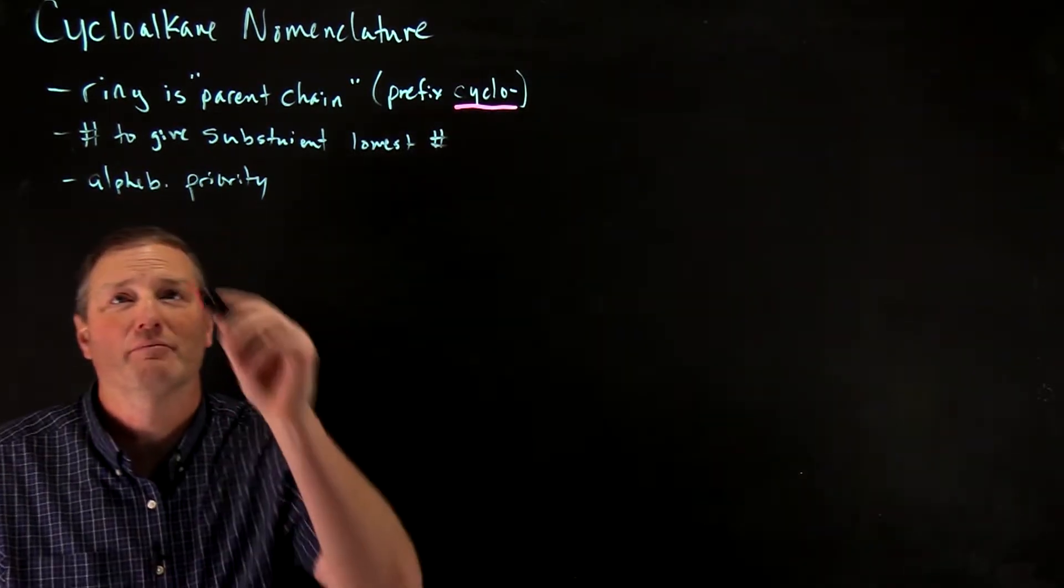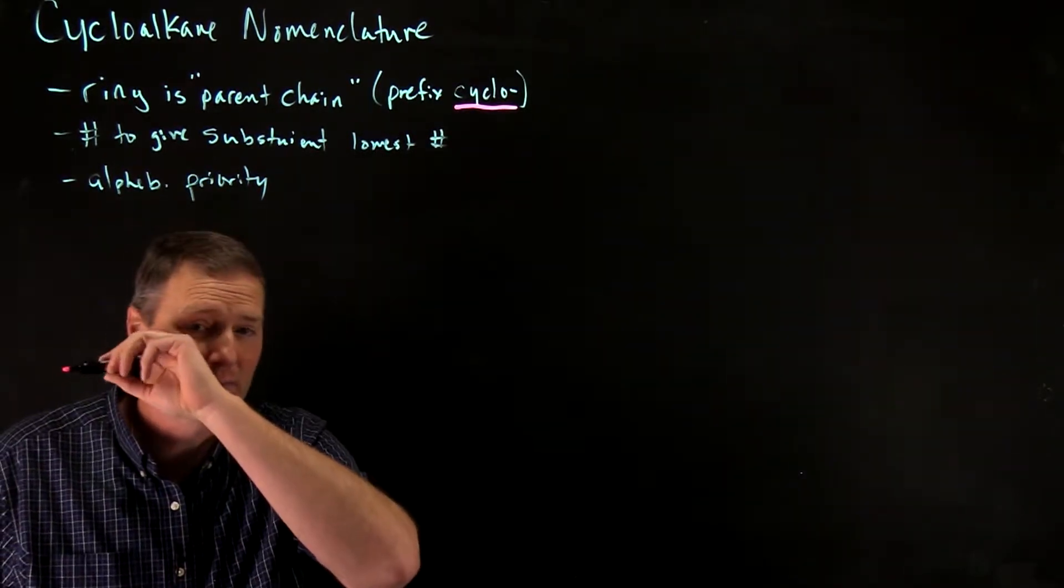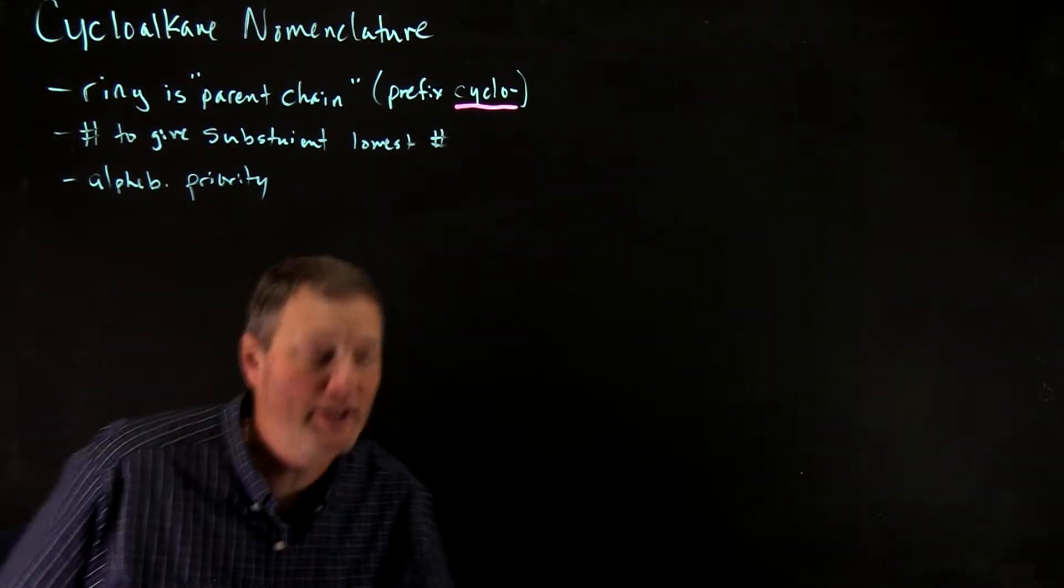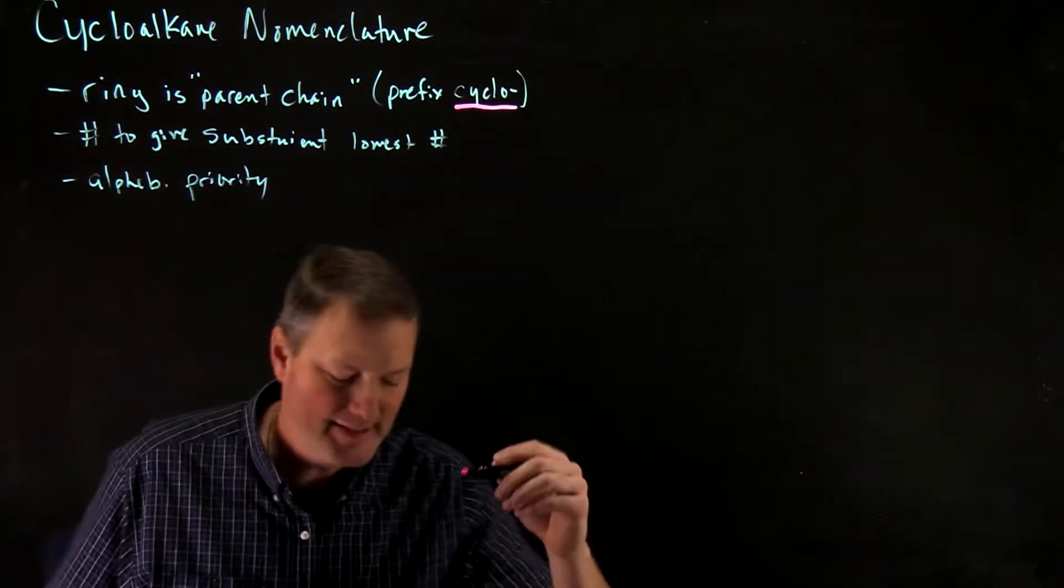And then finally, when you're listing these and numbering them, you follow alphabetization priority rules. So let's take a look at some of the main cycloalkanes that you might encounter.